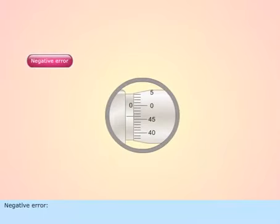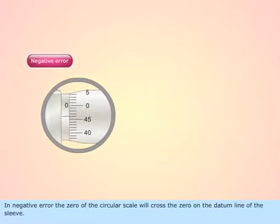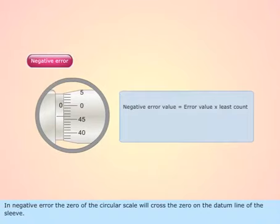Negative error. In negative error, the zero of the circular scale will cross the zero on the datum line of the sleeve.